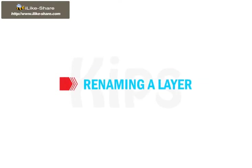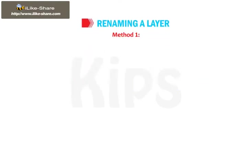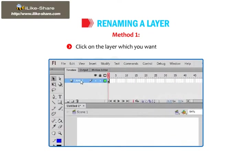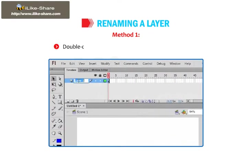Now let's learn how to rename a layer. Method 1: Click on the layer which you want to rename. Double-click on the layer name and type the new name.